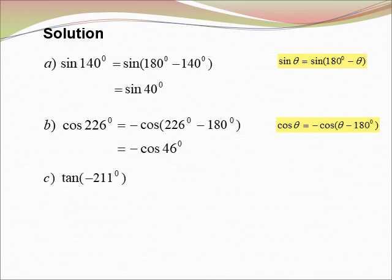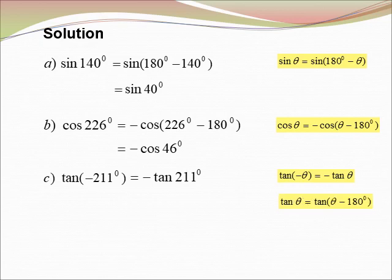C) tangent(−211°). We know that tangent(−θ) equals negative tangent θ, so tangent(−211°) equals negative tangent 211°. Since 211° is in the third quadrant, tangent is positive there. Using (θ − 180°) with theta = 211°, we get negative tangent(211° − 180°) equals negative tangent 31°.